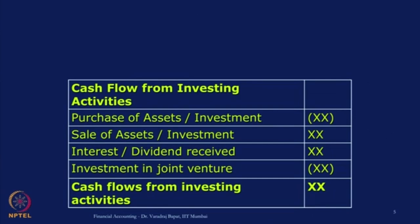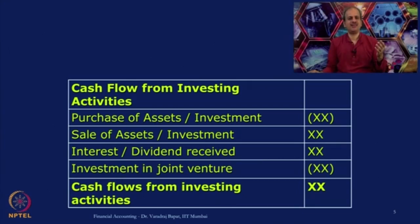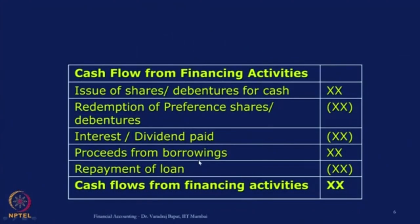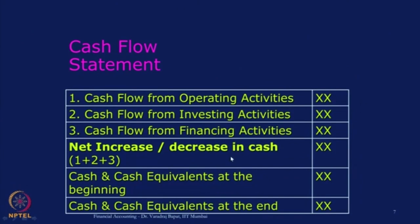The next one is pretty simple — all items related to investment, both inflows and outflows, like purchase or sale of assets or interest received, are all shown under investing activities. The third one is financing activities, where we show all items related to raising of funds by the business, like issue of shares or debentures or taking a loan, and the reverse — redemption of shares or debentures or repayment of loan, and interest or dividend paid thereon. We take the total of the 3 and match it with the increase or decrease of cash during that particular period.